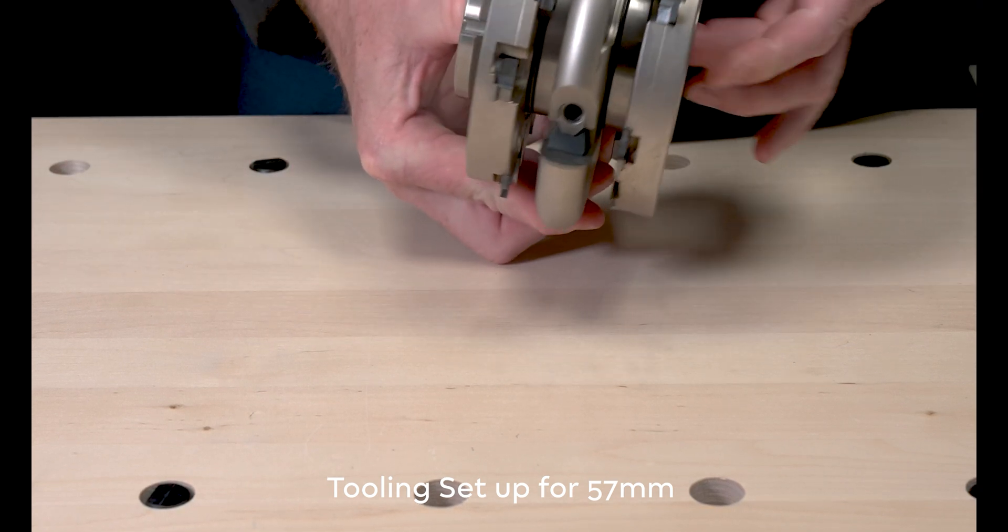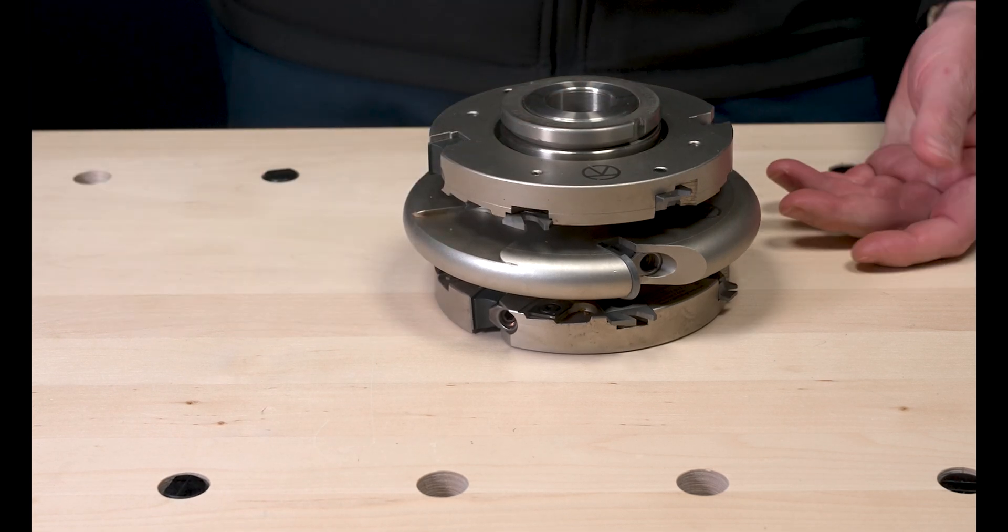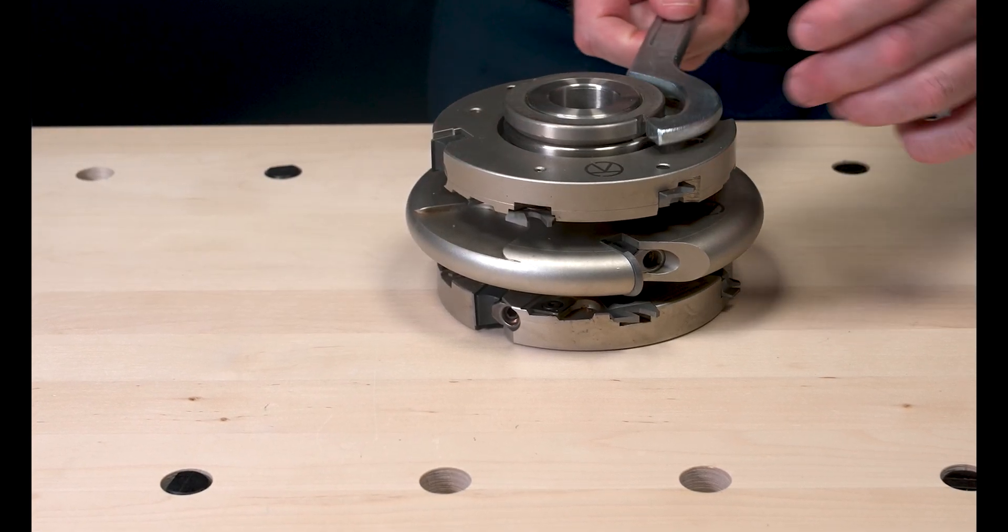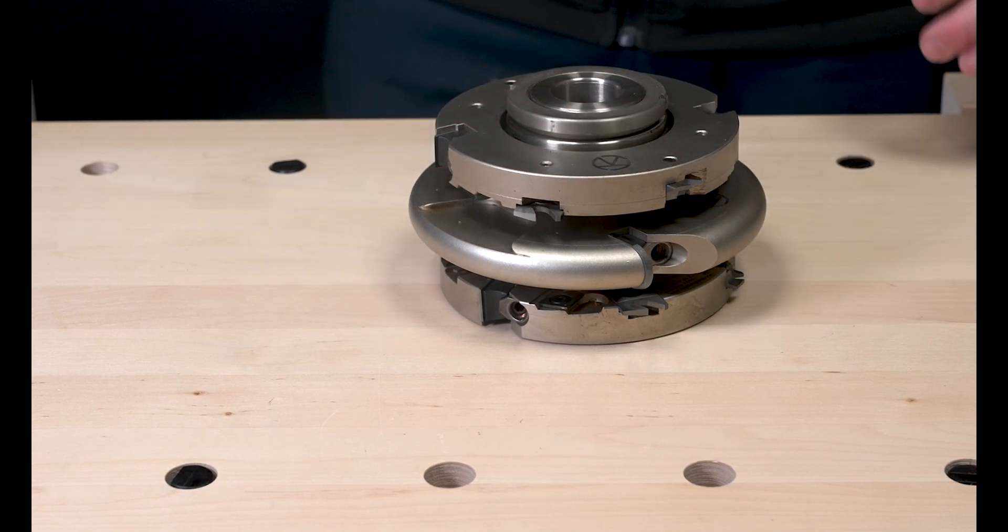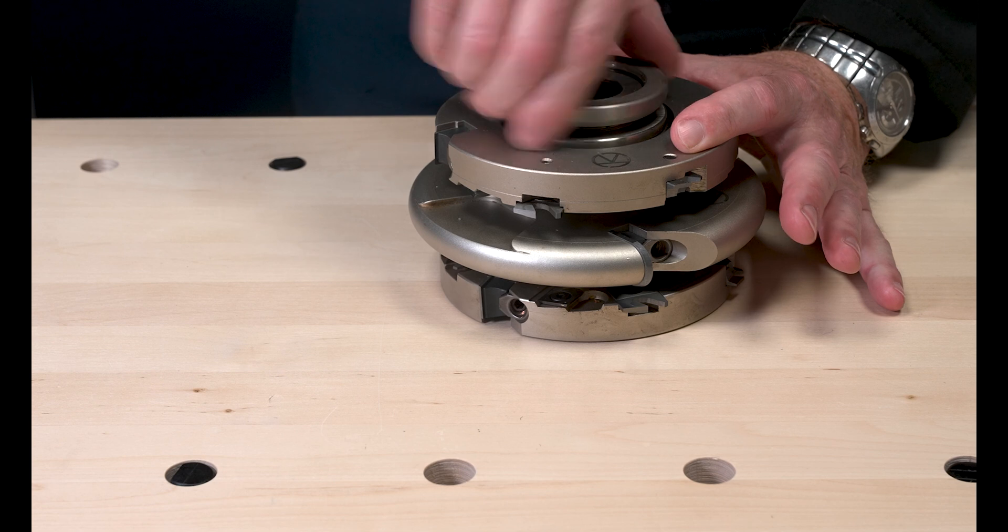This is set up to do the 57mm with the R10 spiral cutter. I'm now going to reassemble this without the R10. So we simply use the C-spanner, loosen the top nut.